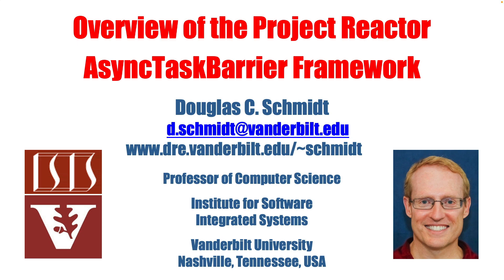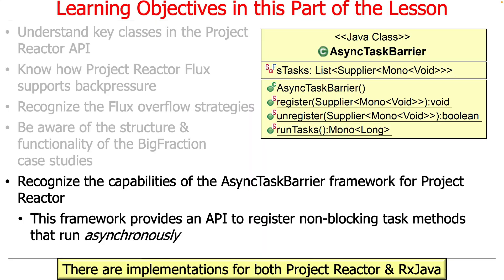There's one more topic to raise before getting into the flux operators, and that is something called the Async Task Barrier framework. This is a framework I created. We're going to talk about why I created it, what it does from an API point of view, and what services it provides. There are implementations for both Project Reactor and RxJava, because different communities have different aesthetics and design goals, and Project Reactor and RxJava are not identical.